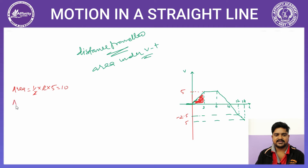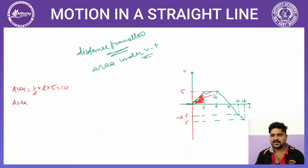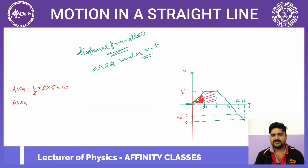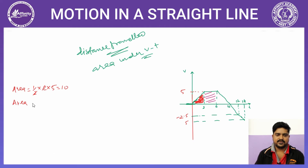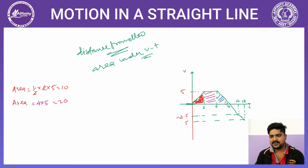Next, इस वाले rectangular portion का area निकालेंगे। ध्यान से देखिए — इसकी height 5 है और length 6 - 2 = 4 है। तो area = 4 × 5 = 20 हो जाता है।